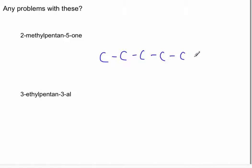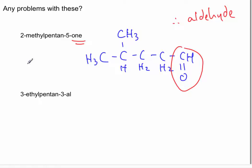2-methylpentan-5-one. 1, 2, 3, 4, 5. Pentan-5-one. Let's put our 2-methyl there. And our pentan-5-one. And hopefully you've already seen the problem. The problem is that a ketone is not a terminal functional group, whereas here we have a terminal functional group. So this is actually an aldehyde. And so the correct name for this molecule is in fact 1, 2, 3, 4. 4-methylpentanal. Because it's an aldehyde.